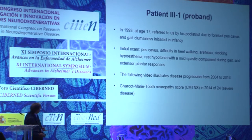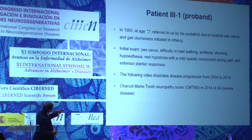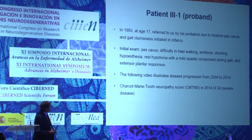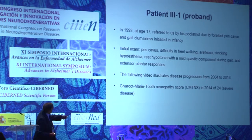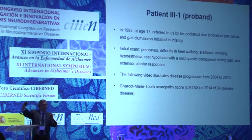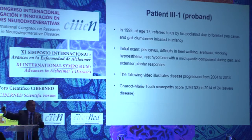The proband was attended for the first time in 1993 at age 17, referred to us by his podiatrist due to forefoot pes cavus and gait clumsiness initiated in infancy. Initial examination at age 17 showed pes cavus, difficulty in heel walking, areflexia, stocking hypoesthesia, distal hypotonia, mild spastic gait, and extensor plantar responses. Charcot-Marie-Tooth neuropathy score, combining electrophysiological and clinical data, gave a score of 24, indicating severe disease. Scores of 1–10 indicate mild, 11–20 moderate, and 21 or more severe disease.